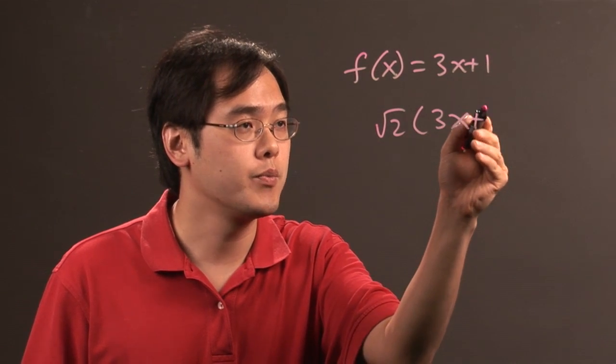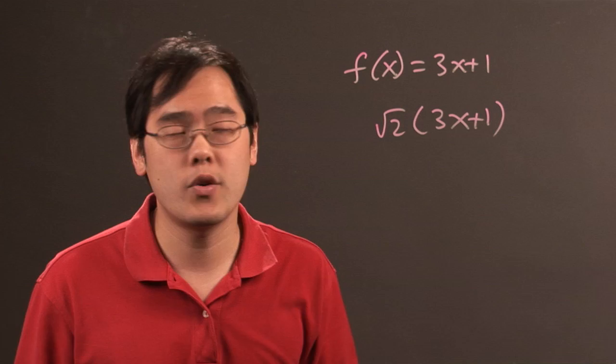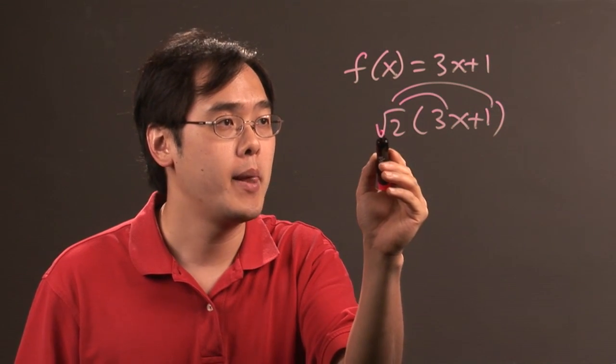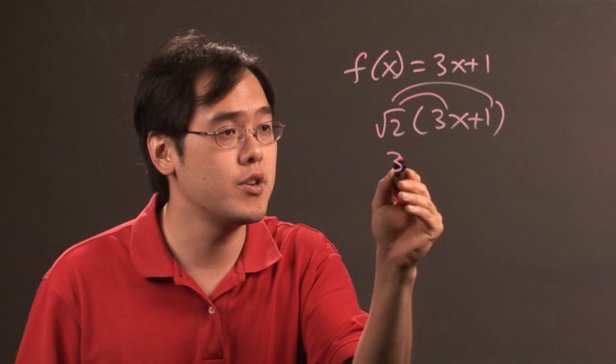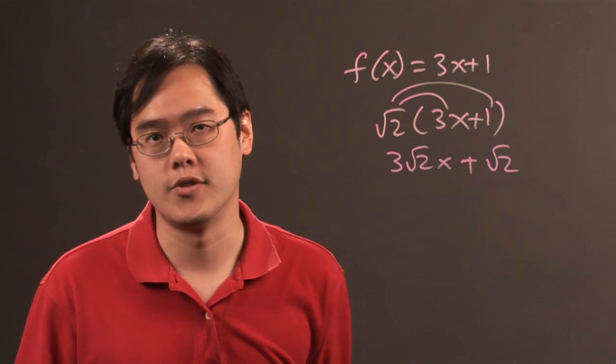If you're multiplying square root of 2 times 3x plus 1, for example, you don't really have much of a choice but to distribute and attach the two. So for example, square root of 2 times 3x is really going to be 3 square root of 2x plus square root of 2 times 1 is going to be square root of 2.